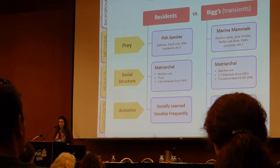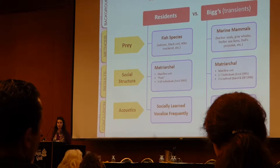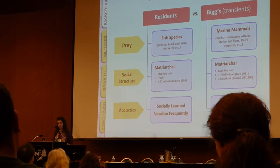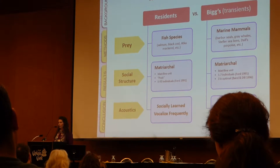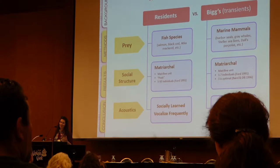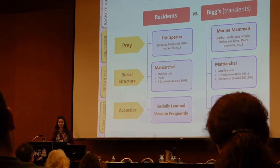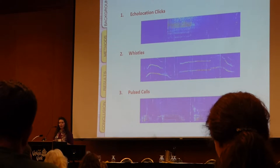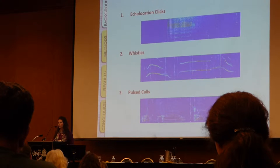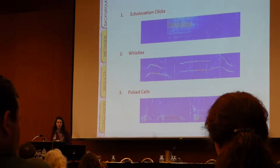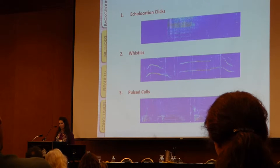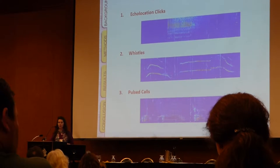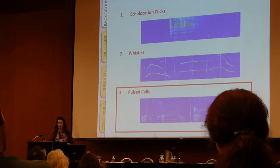When it comes to vocalizations, both residents and Biggs killer whales produce vocalizations which are socially learned. The difference is that resident killer whales vocalize very frequently, whereas Biggs killer whales vocalize infrequently, which makes it very challenging to actually record them. When talking about killer whale vocalizations, there are three main types: echolocation clicks, which are broadband pulses generally used to locate prey; whistles, which are modulated tonal sounds; and pulse calls, which are the most common and the focus of my research.